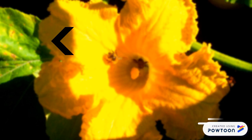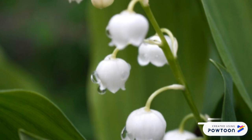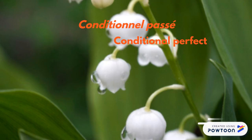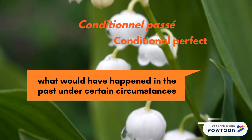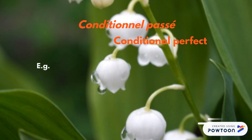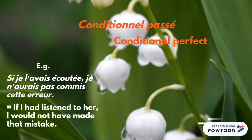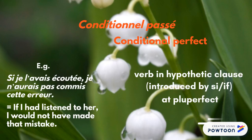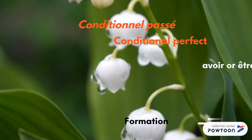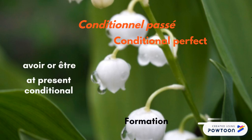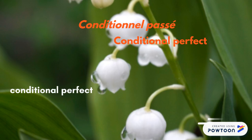So far we have dealt with tenses of the indicative mood, but this also applies to other moods — for instance, the conditional. So let's see the conditionnel passé, or conditional perfect. It is used to indicate what would have happened in the past under certain circumstances. For example, si je l'avais écoutée, je n'aurais pas commis cette erreur — if I had listened to her, I would not have made that mistake. Note that the verb in the hypothetical clause introduced by si is at the pluperfect. You conjugate the auxiliary avoir or être at the present conditional and add the past participle of the verb. You translate the conditional perfect with the English equivalent: would have plus past participle.